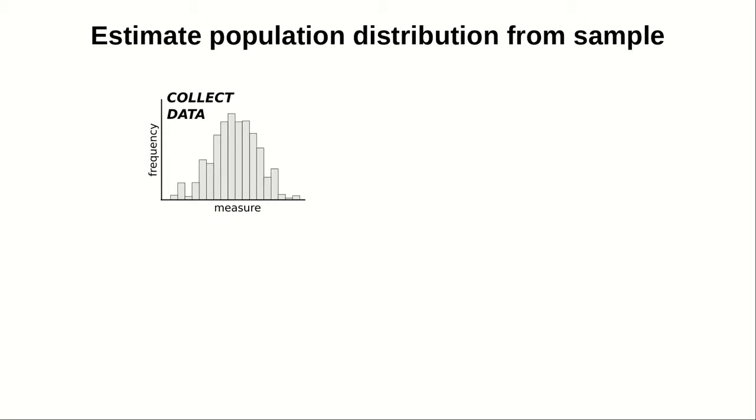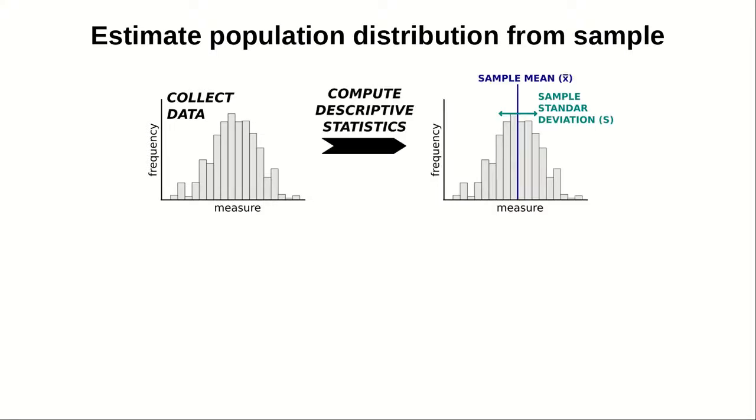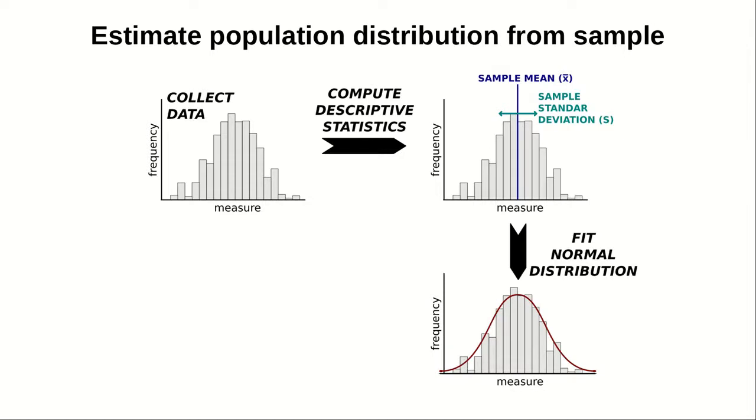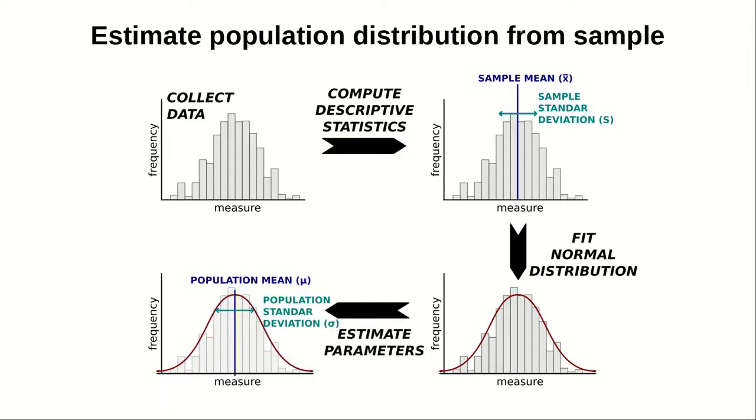So here's one graphical way of showing this. We start collecting the data, and then we compute the mean and the sample standard deviation. Remember the use of degrees of freedom. Then we fit a normal distribution, and that would be the inferred normal distribution of the population based on our sample values.